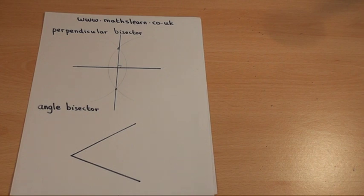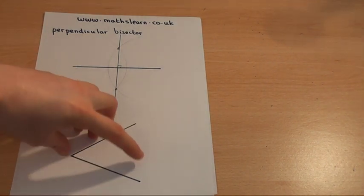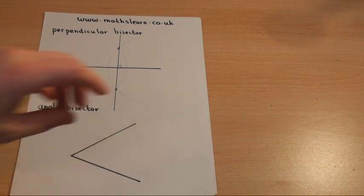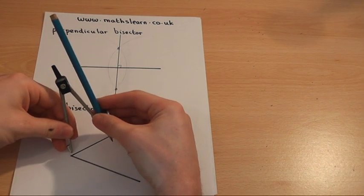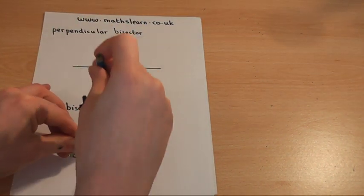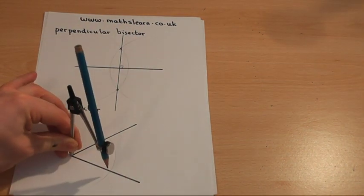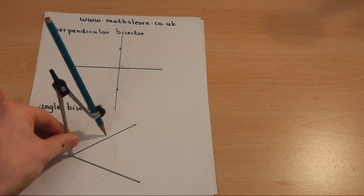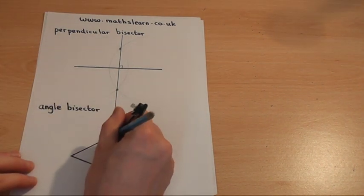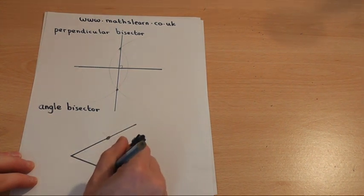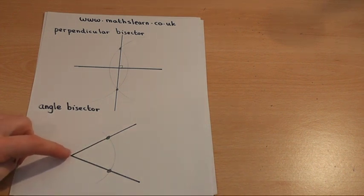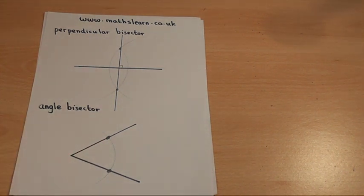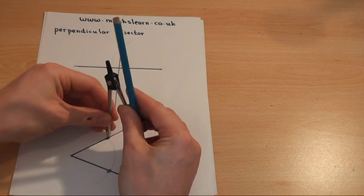This involves two stages. Stage one: these two lines are potentially different lengths, so get your compass and draw a small arc across both lines. This arc produces two points, and these two points will be a fixed distance from the beginning of the angle.